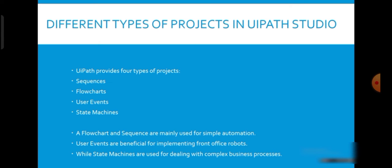Before we understand what a sequence is, we need to understand the different types of projects supported in UiPath Studio. UiPath provides four different types of projects: the first one is sequence, second one is flowcharts, third one is user events, and fourth one is state machines. In this video, we are concentrating mainly on sequences.